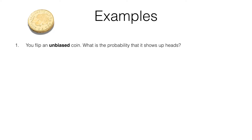In this lesson we're looking at the theoretical probability of an event occurring. This is a fairly simple topic but there are a lot of key words that many students often get wrong, so I'll highlight these as we go through the questions.